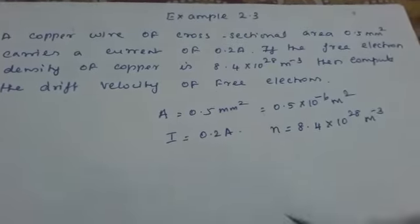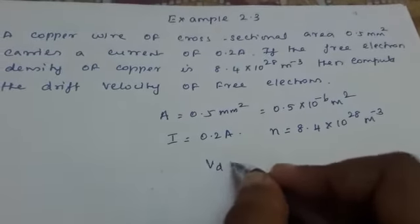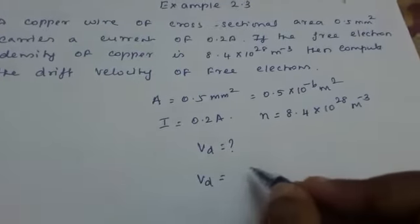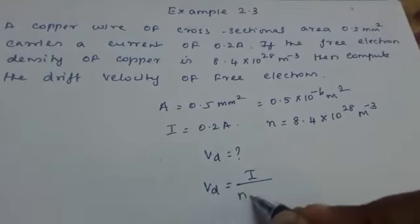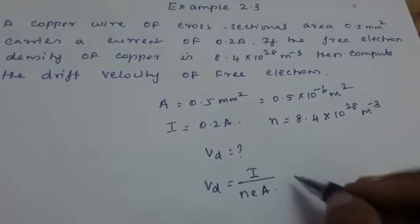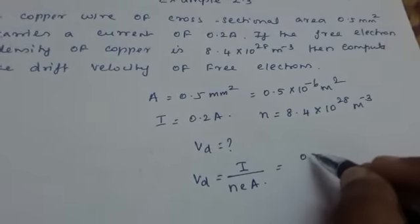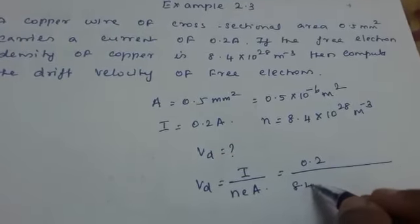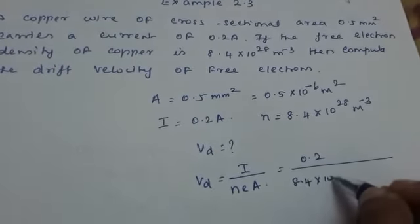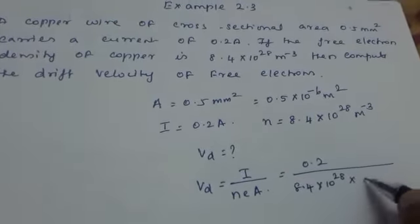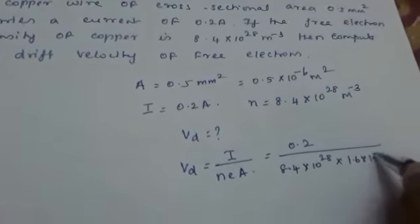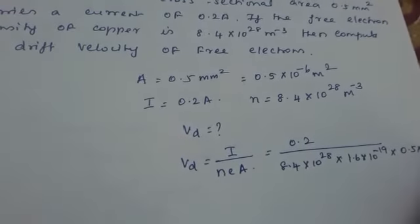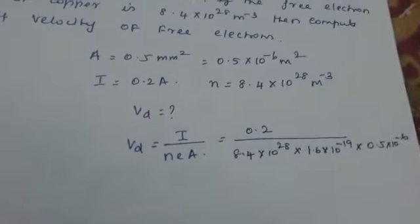Now we have to find the drift velocity Vd. The formula is Vd = I/(neA). Substituting the values: I is 0.2, n is 8.4 × 10²⁸, e is 1.6 × 10⁻¹⁹, and A is 0.5 × 10⁻⁶.